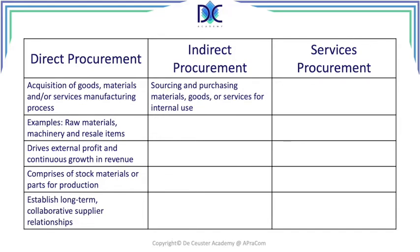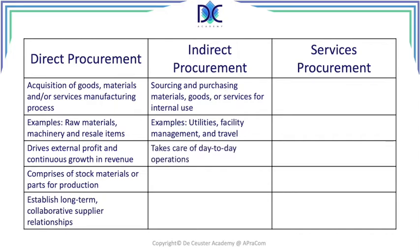Indirect procurement is about sourcing and purchasing materials, goods, or services for internal use — like telephones, computers, paper clips, and things like that. These make your organization work. We look at utilities, facility management, travel, and taking care of day-to-day operations.